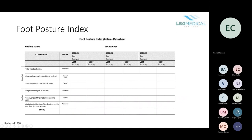The Foot Posture Index is a diagnostic tool for scaling how pronated or supinated a patient is in a relaxed stance position. It has six different components measured across all different planes, which is good because lots of assessments only assess in one plane. You put a score in each box and at the end you get an overall score telling you how supinated or pronated the patient is.